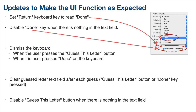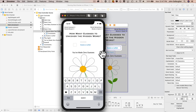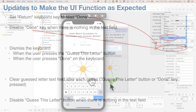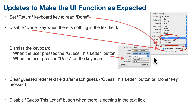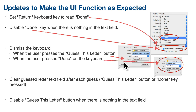Next, if the user presses done or presses the guess a letter button, we want to dismiss the keyboard so the user can see what's happening with the flower in the background. Our app doesn't dismiss the keyboard yet. We already have an IB action for guess letter pressed, so we just need to learn how to dismiss the keyboard. Pressing the return key — now called the done button — is referred to as the primary action for a text field. To set up an IB action for pressing the return key, we'll control drag from our text field and create an IB action called done key pressed, making sure the event is primary action triggered.